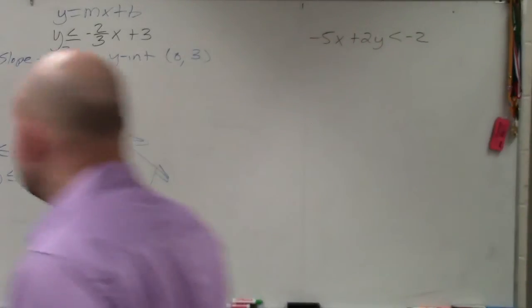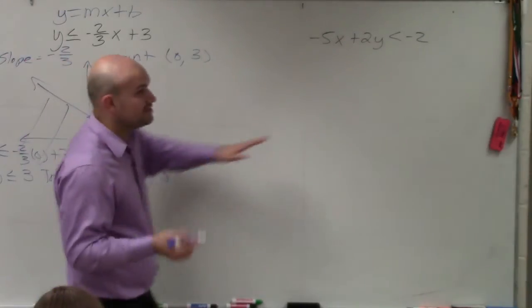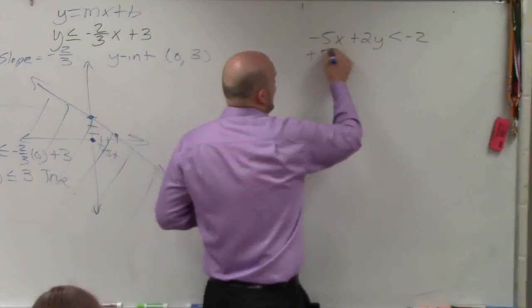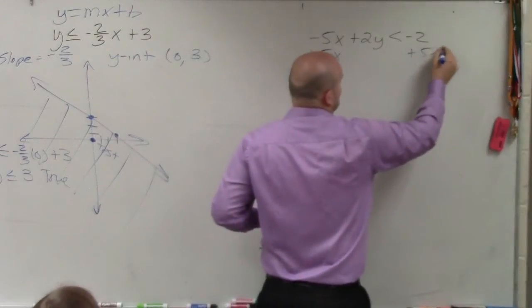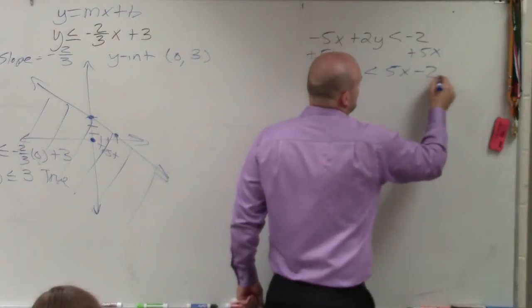So in the next example, now we have an equation that's not in slope-intercept form. So the first thing we have to do is isolate the y, put it in slope-intercept form. So I add 5x to both sides. 2y is less than 5x minus 2.